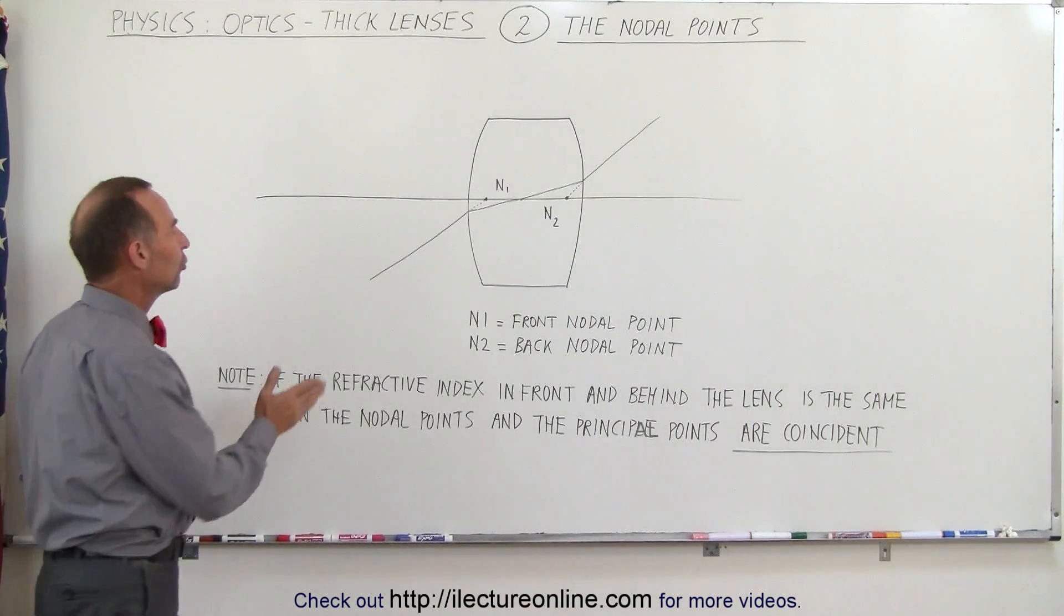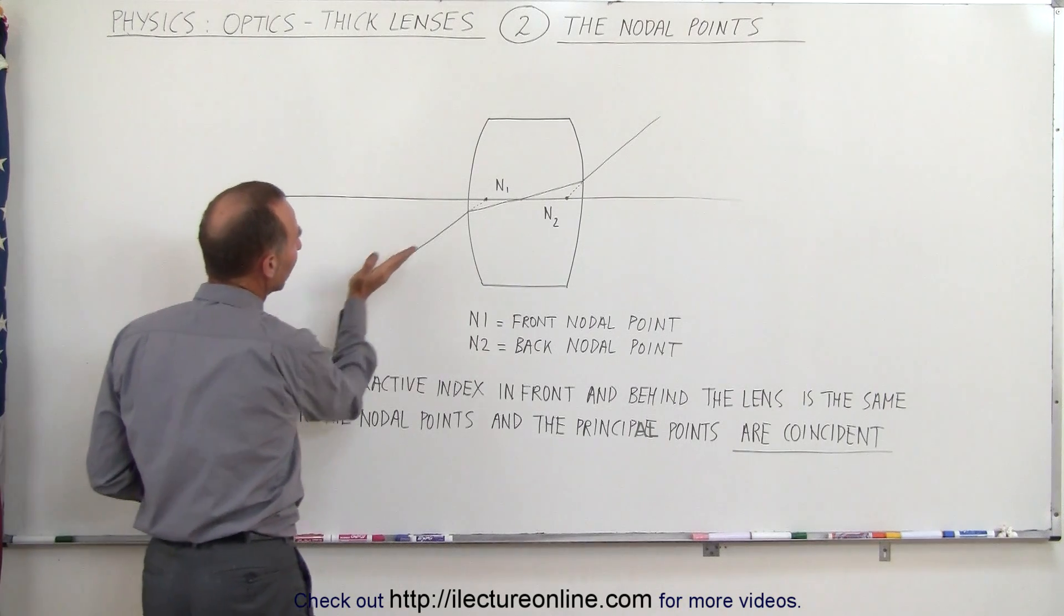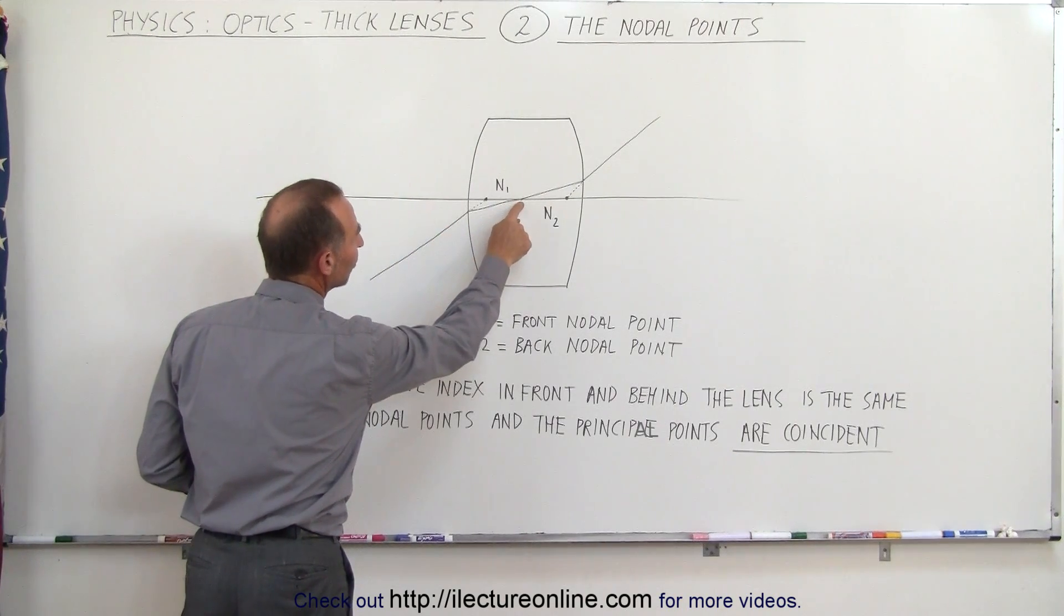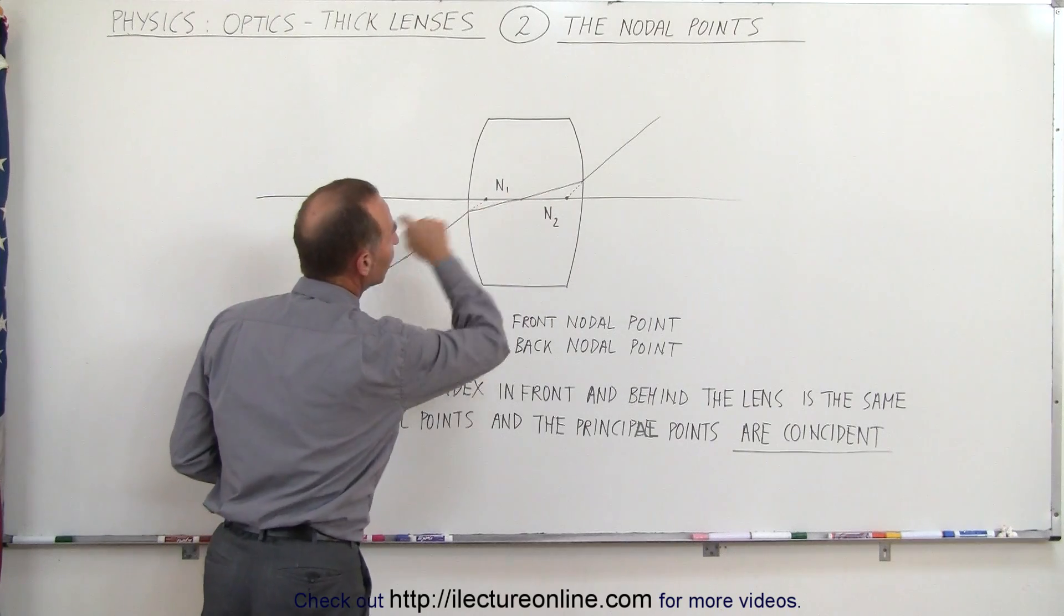The way to find them is to have a ray enter the lens but not direct it towards the very center of the lens and on the optical axis.